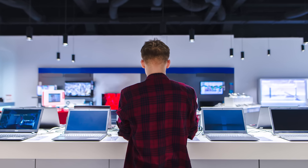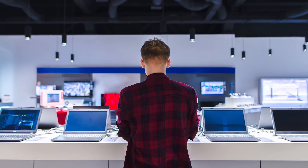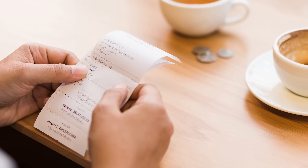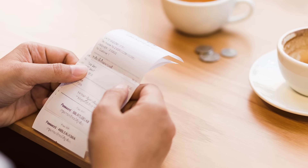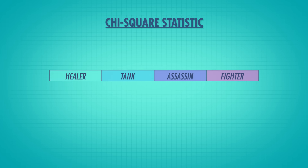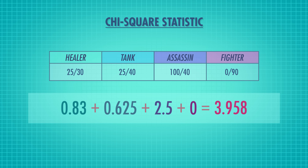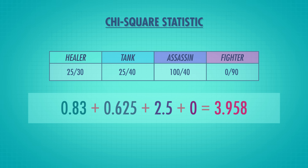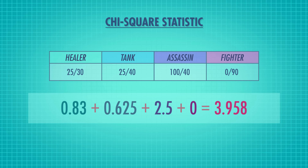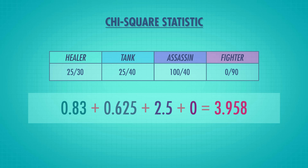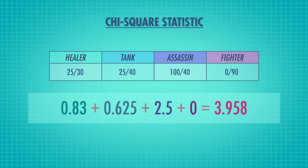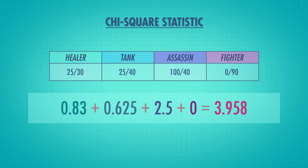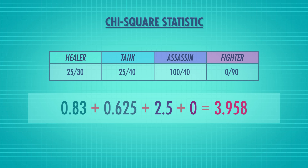You might not think it's worth it to go back to the store to demand a refund if you're overcharged a dollar for a $2,000 laptop, but it might feel more worth it if you were overcharged a dollar for your morning coffee. When we add up all these calculations, we get a chi-square statistic — in this case, 3.958 — which, like our other test statistics, helps us quantify how well our sample data fits a certain distribution, usually the null distribution.